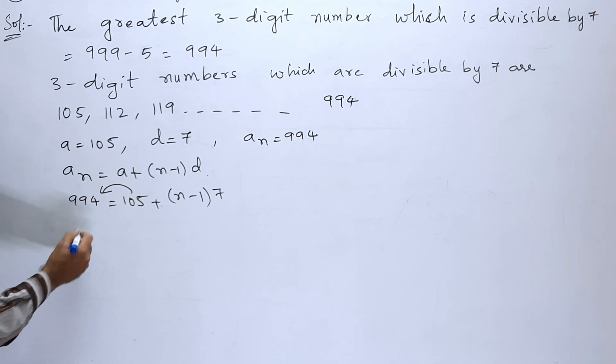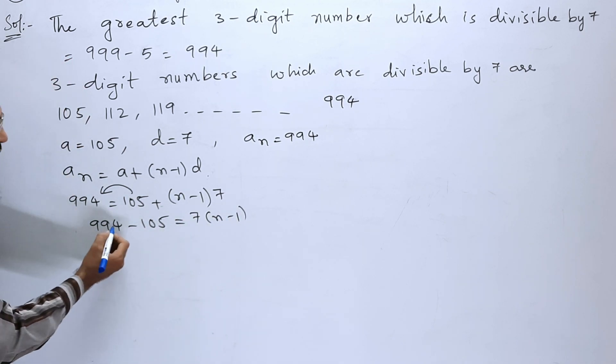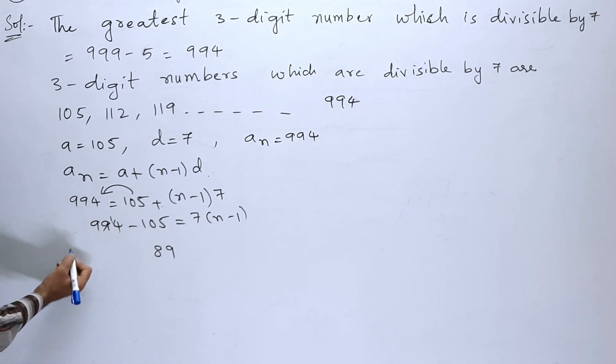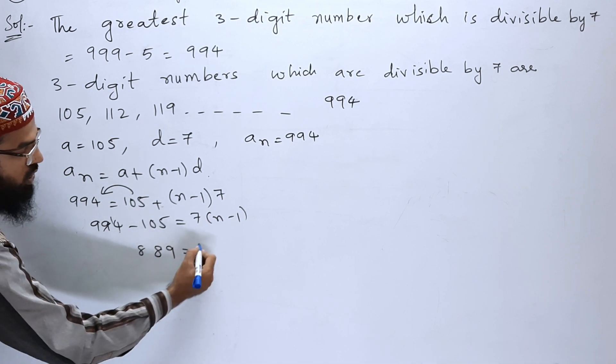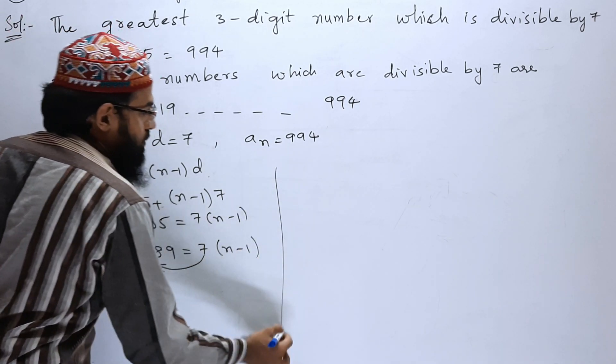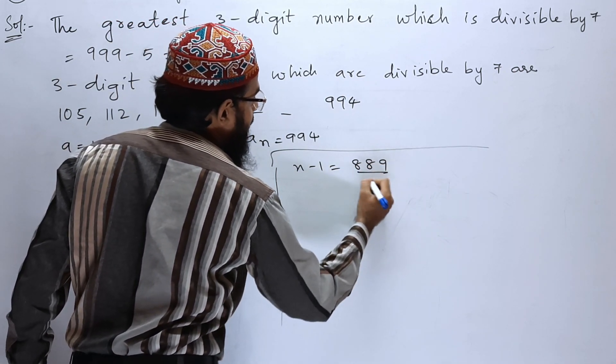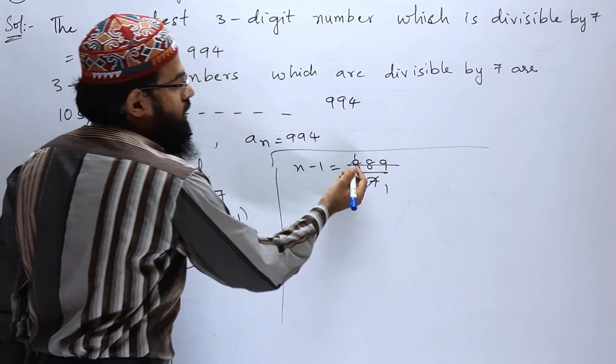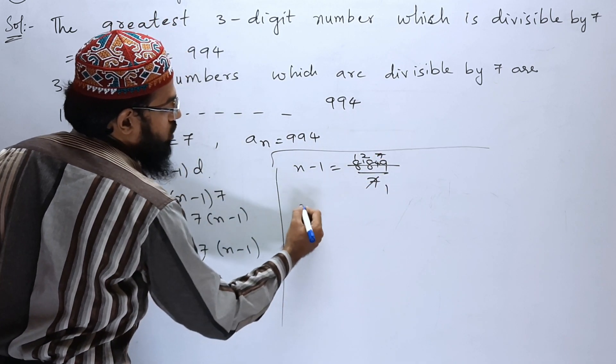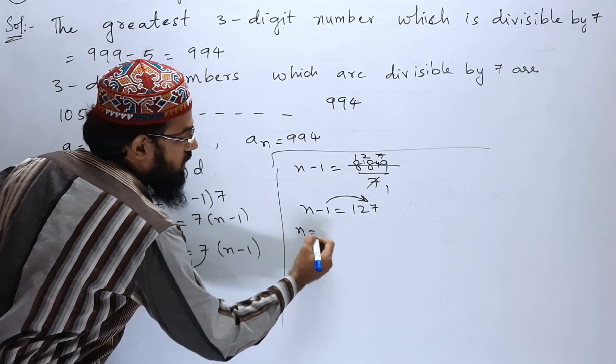Let us bring this 105 to this side. 994 minus 105 is equal to 7 into (n-1). 14 minus 5 is 9, 8 minus 0 is 8, 9 minus 1 is 8, so 889 is equal to 7 into (n-1). Now bring this 7 down. So we will get n-1 is equal to 889 by 7. 7 ones are 7, 1 left, 7 twos are 14, 4 left, 7 sevens are 49. So n-1 is equal to 127.